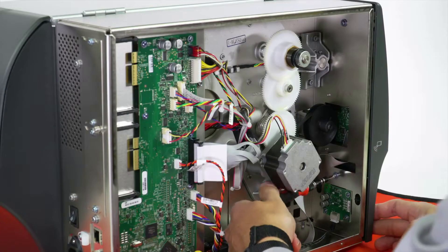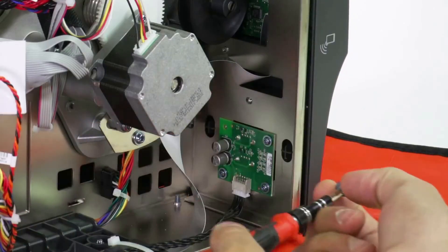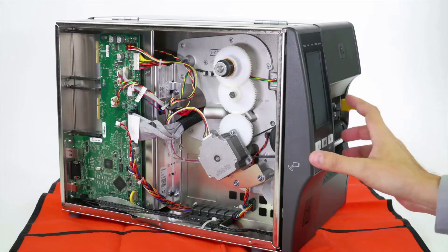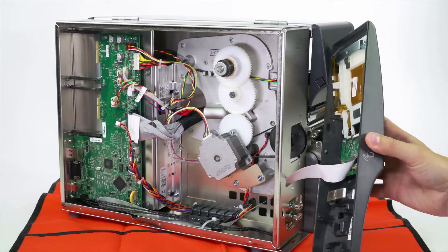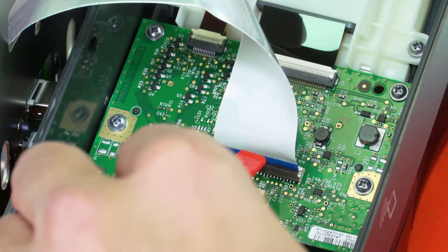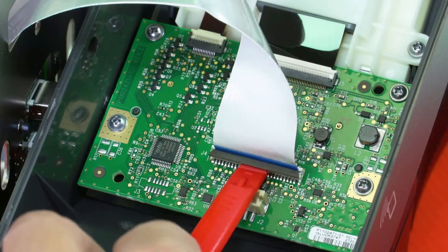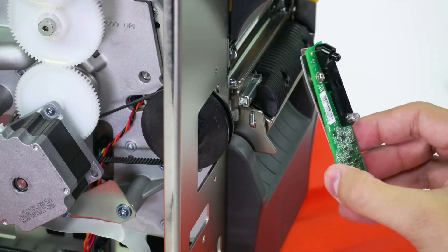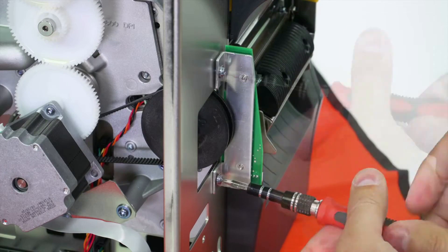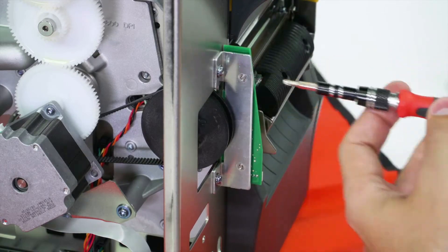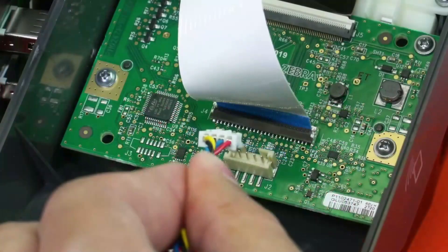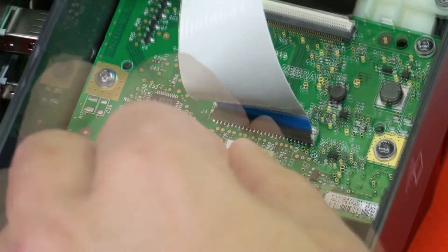Remove the control panel screws. Remove the control panel. Unlock and disconnect the ribbon cable. Mount and fasten the take label sensor. Reconnect and lock the ribbon cable. Connect the take label sensor cable.